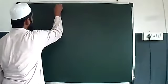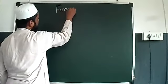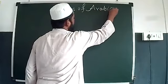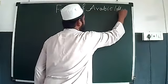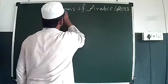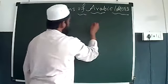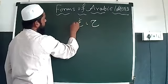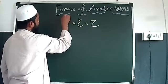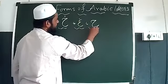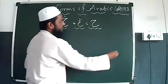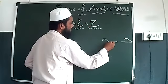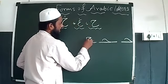Forms of Arabic letters. Haa, Haa, Haa — Middle form, Haa ka end form.